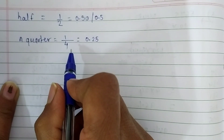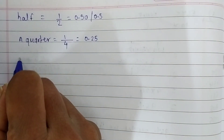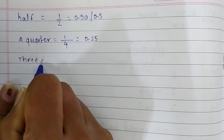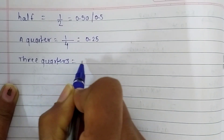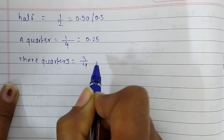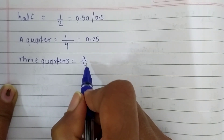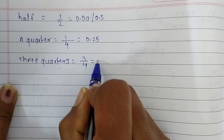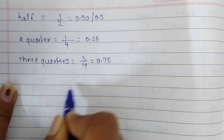Then we are going to see three quarters. It is written as 3 upon 4 in fraction form, and in decimal form it is written as 0.75.